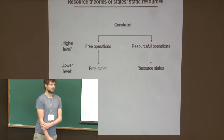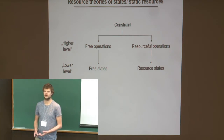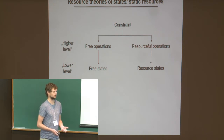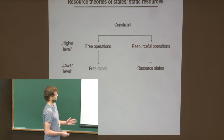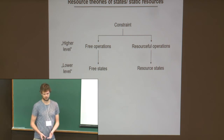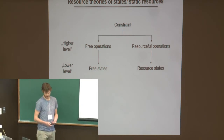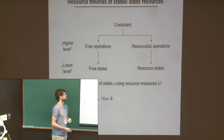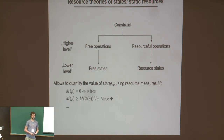Let me begin with something all of you already know: how resource theories on the level of states work. We have a constraint motivated either by physical considerations, by practical constraints like how well we can control some systems, or also by theoretical considerations. From this constraint everything develops. The constraint separates the states and the operations into free and resourceful. We have a lower level which are the states and the upper level which are the operations that transform the lower level, and this allows us to quantify the value of the lower level. We can come up with measures — functionals from states to the non-negative real numbers — that put a number on these states and say how valuable they are.